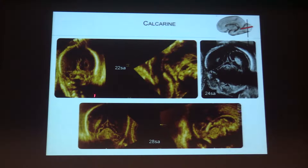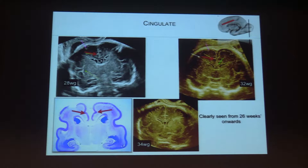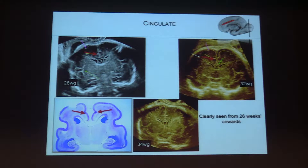After that, you have the calcarine fissure, which is better seen in the coronal plane to be orthogonal to it — here you can see the calcarine fissure on the coronal plane. The cingulate fissure, which is sagittal in orientation, will be easier to recognize on the coronal plane. It is very important to include on your report to confirm correct gestation between 20 and 26 weeks.